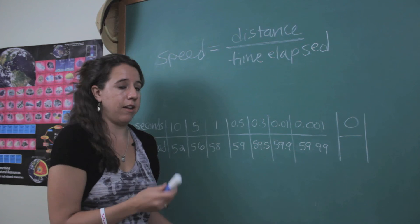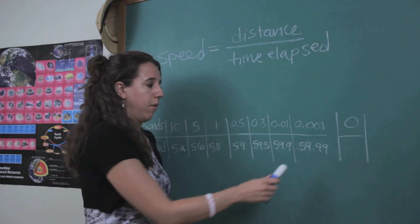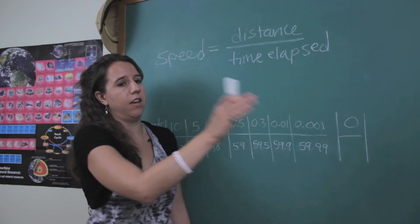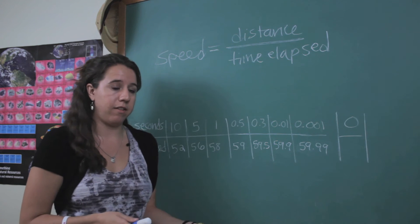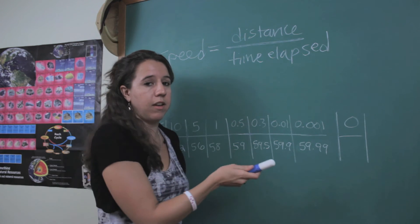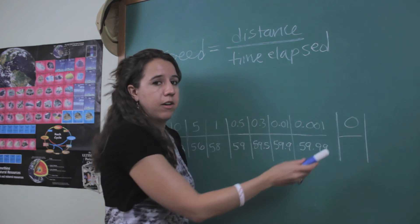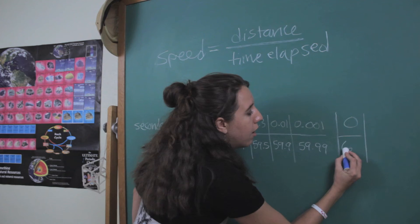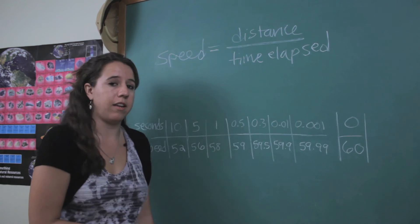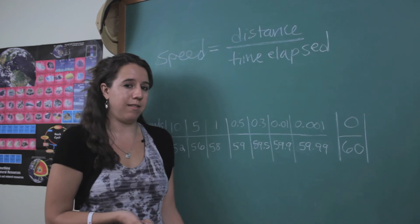And I know that if I kept doing this forever, I would get 59.999999 and I'd never actually hit 60. But using calculus, we can prove that if I actually could divide by zero, then in this particular problem I would actually get 60 as my instantaneous speed.